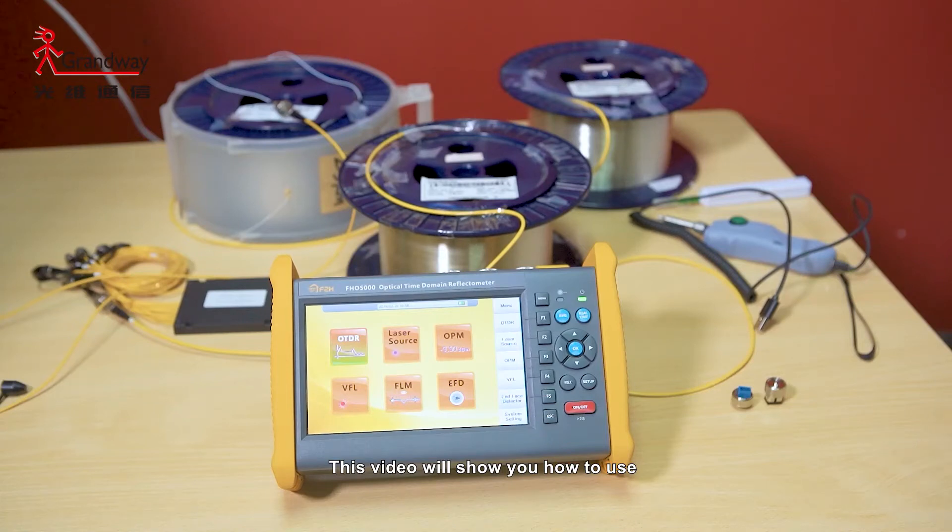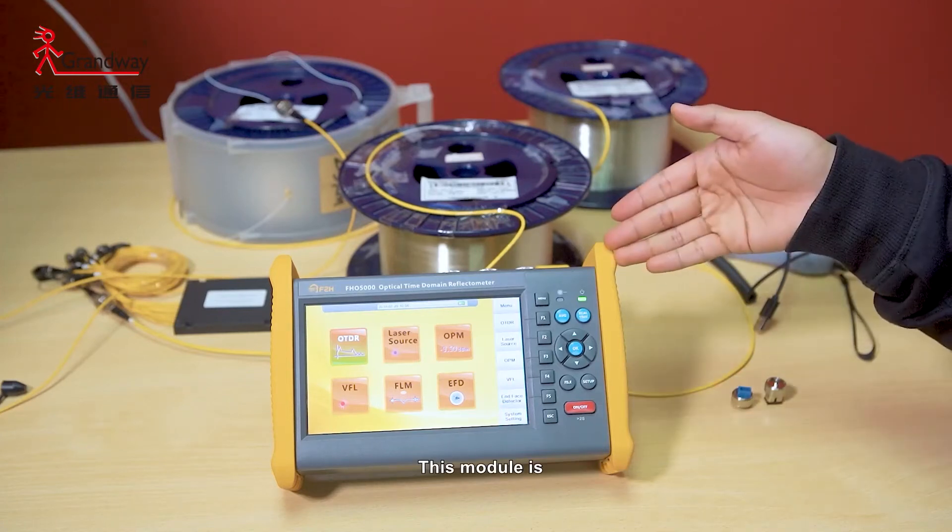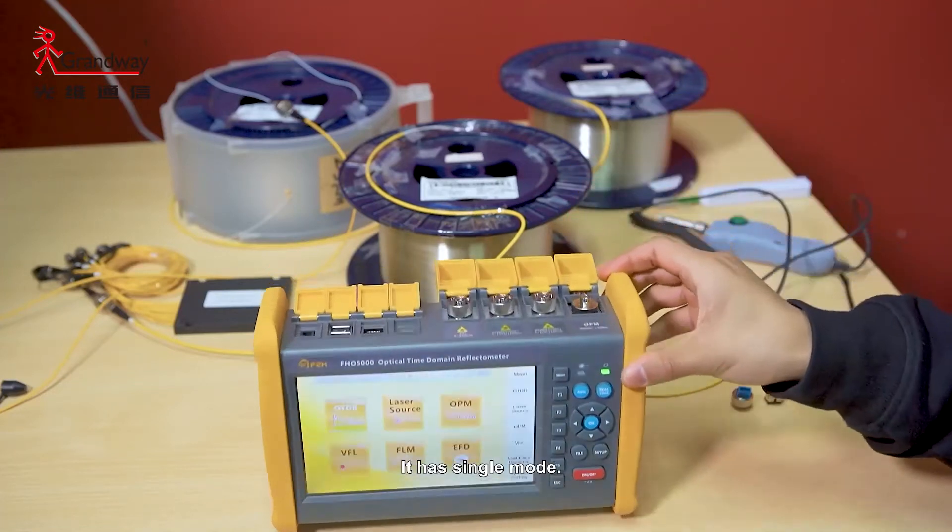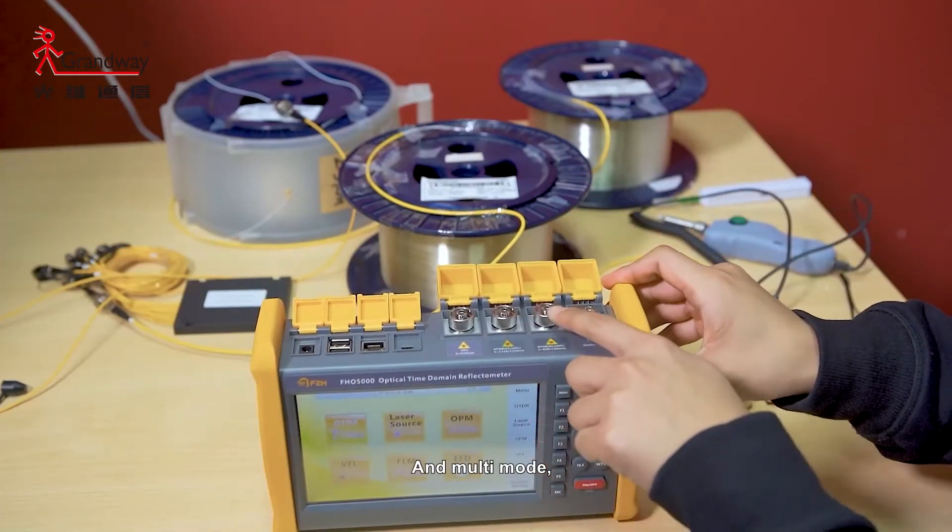This video will show you how to use the 5000 OTDR to test the optical fiber line. This module is MD21. It has single mode and multi mode.